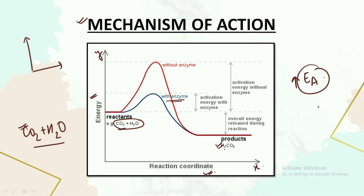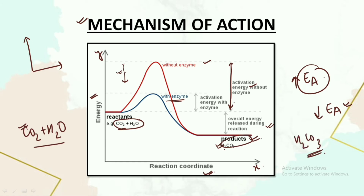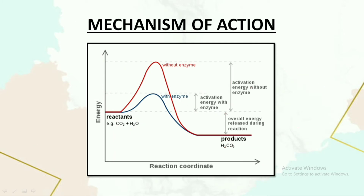If the enzyme is present, it leads to a decrease in the activation energy for the complete mechanism. When the enzyme is absent, more activation energy is used, and after that energy is released and the product H₂CO₃ is formed. But if we use the enzyme, the activation energy required is much less, while the same amount of energy is released, also leading to the formation of H₂CO₃. So the enzyme lowers the activation energy.